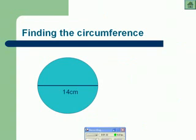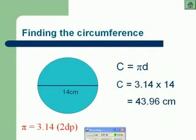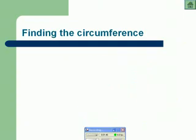So here's the answer to the question. We know that the formula is pi times diameter. We know pi is 3.14, so we've got to find 3.14 times 14, which is 43.96 centimetres.